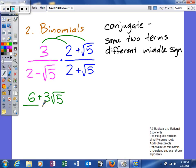And then our denominator, we're going to multiply each one of these two terms by each one of those. So 2 times 2 is 4. 2 times the square root of 5 is 2 square root of 5. Negative square root of 5 times 2 will give me negative 2 square root of 5. And then negative square root of 5 times square root of 5 is going to be negative square root of 25.